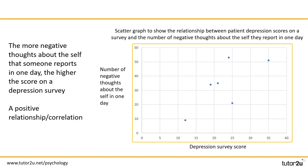From the graph we can tell that there is a positive relationship, meaning that the more negative thoughts about the self that someone reported in one day, the higher the score on the depression survey.